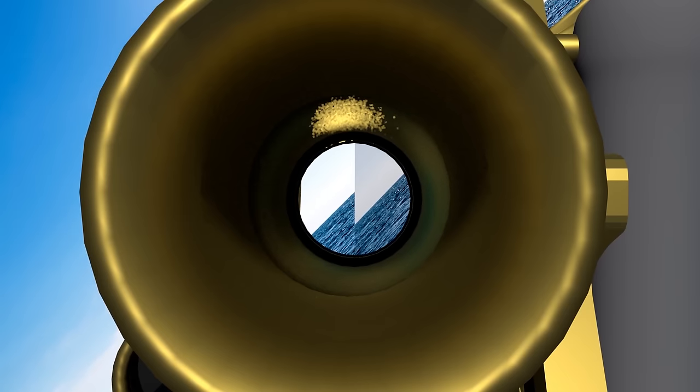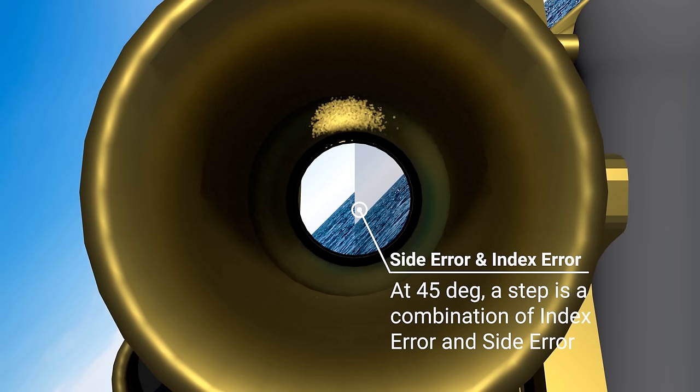Obviously, if you've got a lot of index error to start with, it's harder, so you may have to tilt your head over to 90 degrees, so that all of the error that's visible is side error, and none of it is index error. Normally, a 45 degree head tilt will be plenty.